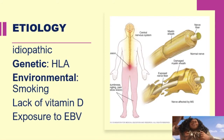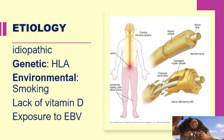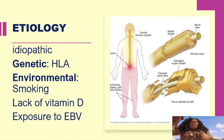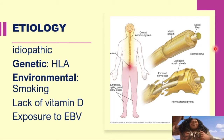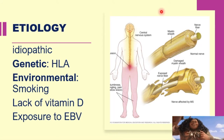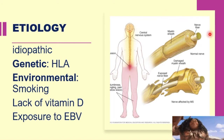The etiology is idiopathic. However, studies show that in terms of genetics, the presence of human leukocyte antigen is a predictor of multiple sclerosis. Environmental factors include smoking, lack of vitamin D, and exposure to Epstein-Barr virus (EBV), all of which increase the risk for multiple sclerosis.